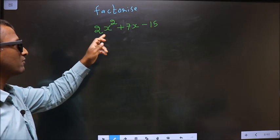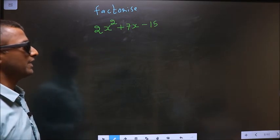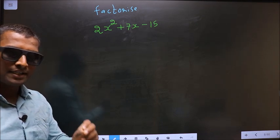Factorize 2x square plus 7x minus 15. To factorize, step 1.